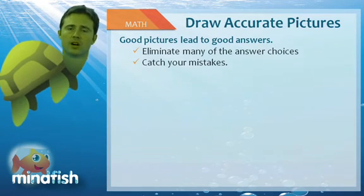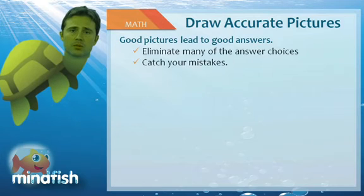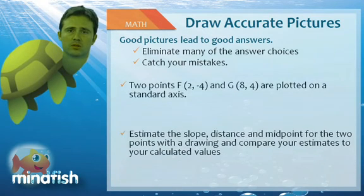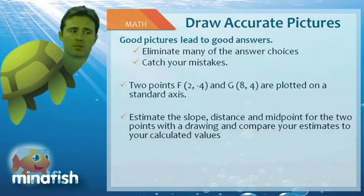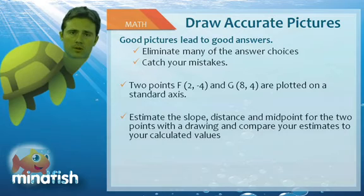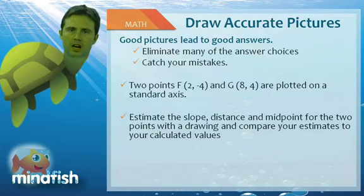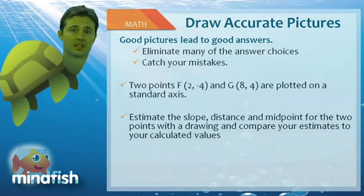So I mentioned earlier on that drawing accurate pictures can really help. And I want to stress that if you don't remember any of these equations, if you can draw an accurate picture, you can often get an estimate for both slope, distance, and midpoint. So be careful if you draw pictures. You need to make them accurate if you want them to be estimates. But always, if you're not sure, draw an accurate picture. And you should be able to come up with an accurate estimate for any of the equations that we talked about.